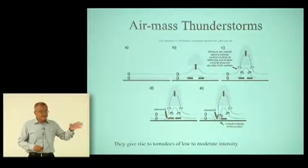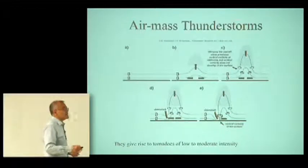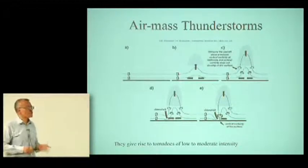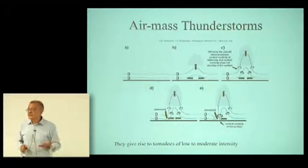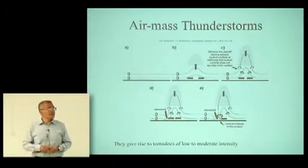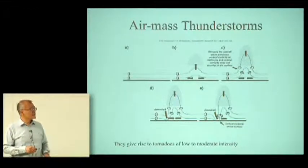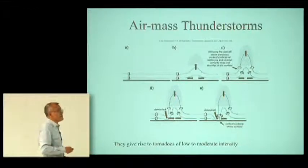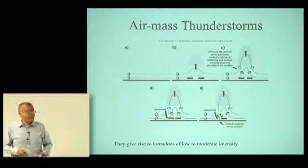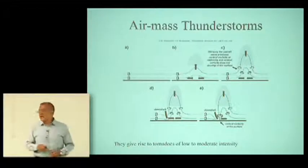There are a few mechanisms to generate a tornado depending on the thunderstorms that generate them — we'll always have to have a thunderstorm. The first one we heard about in the previous talk is the air mass thunderstorm. We know that the atmosphere is heated from below and then you see these ascending currents and the formation of clouds.